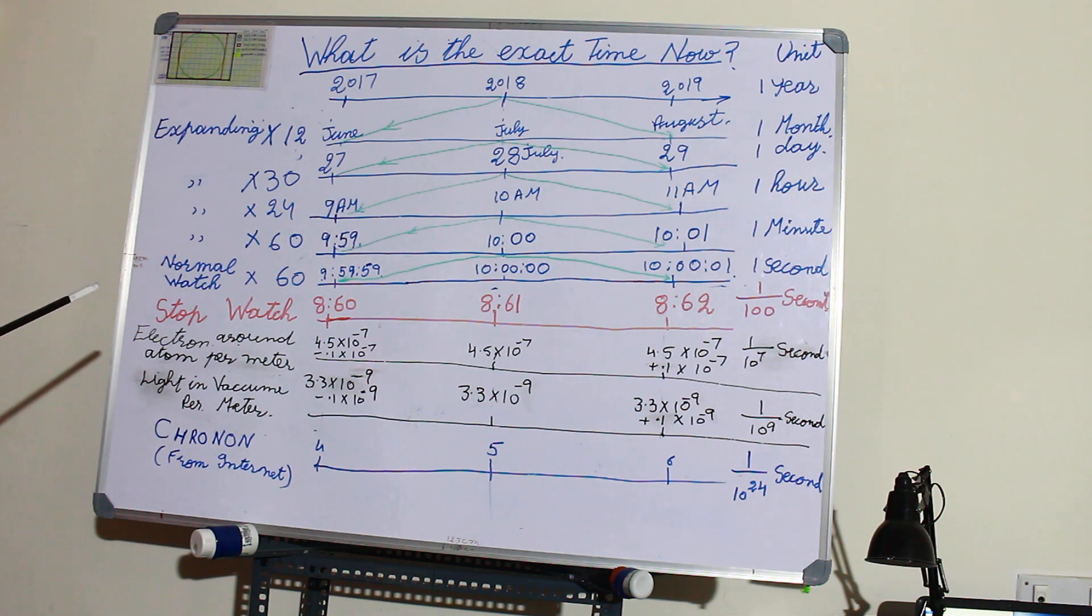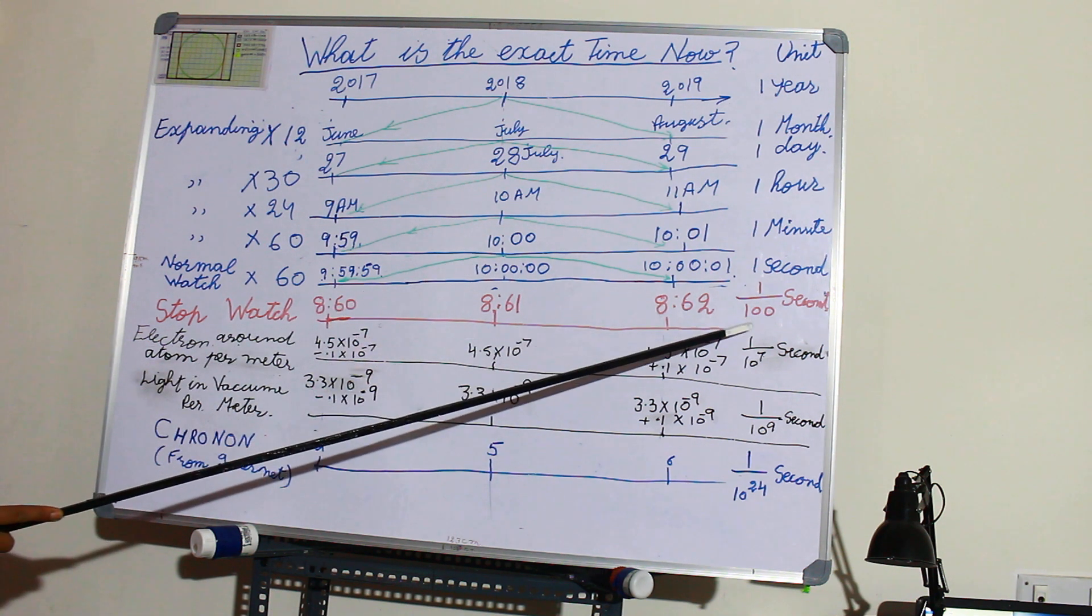For 100 meter races, judges use stopwatches with seconds divided into 100 parts and 10,000 parts.